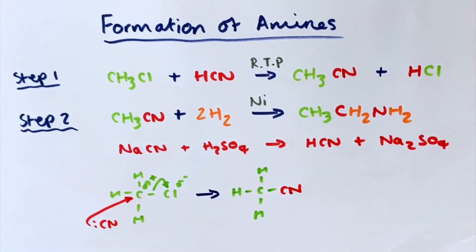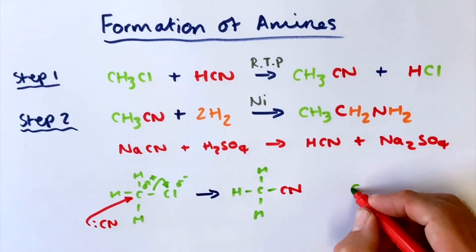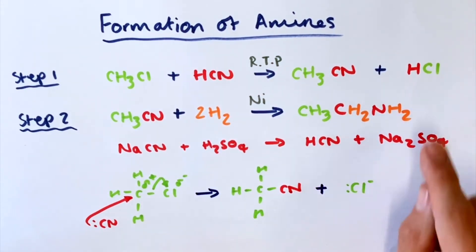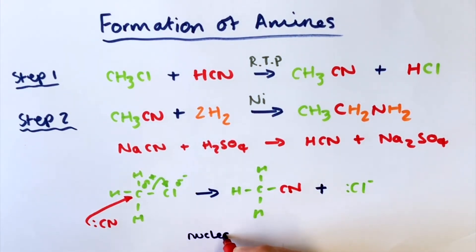And we've now produced a nitrile here, and we have lost the chlorine from that. This chlorine here, that's going to react with the hydrogen from the hydrogen cyanide to make hydrogen chloride here. So this reaction, just like in the previous one, is a nucleophilic substitution. And this produces our nitrile here, so this is ethane nitrile.